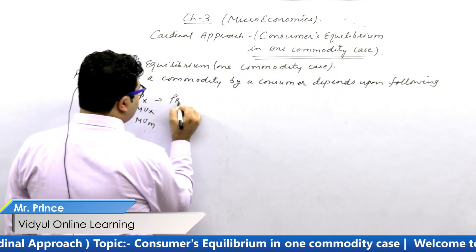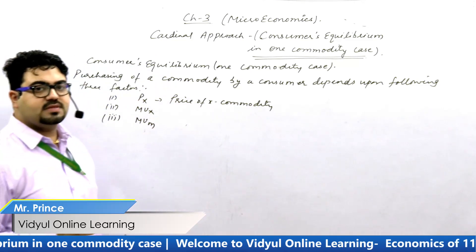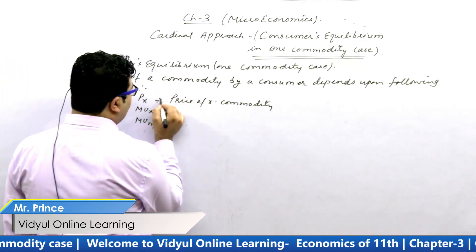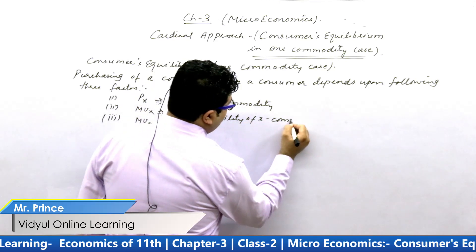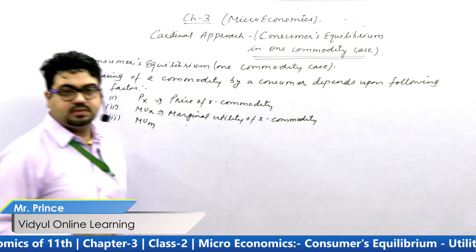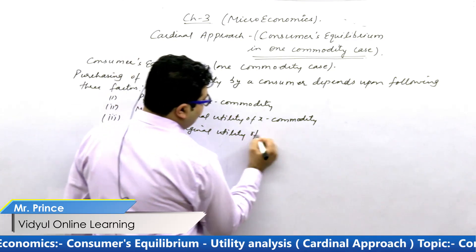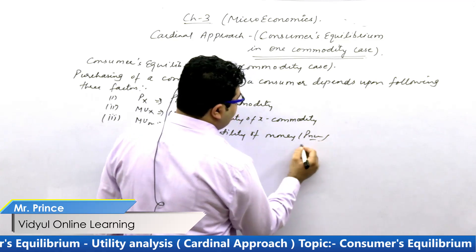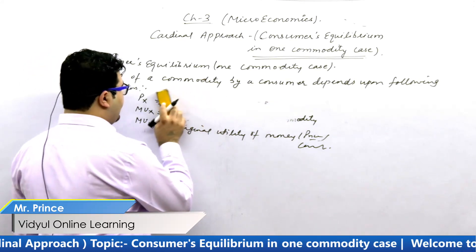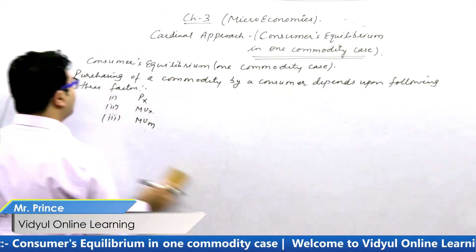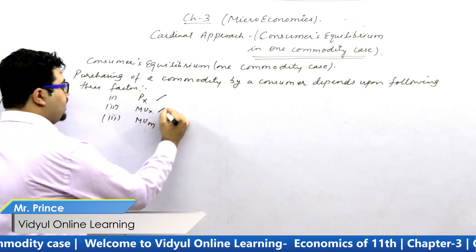Px means the price of commodity X. MUx means the marginal utility of commodity X. MUM stands for the marginal utility of money, which I have told you is assumed to be constant. The purchasing decision of a consumer rests on these three things: Px, MUx, and MUM.